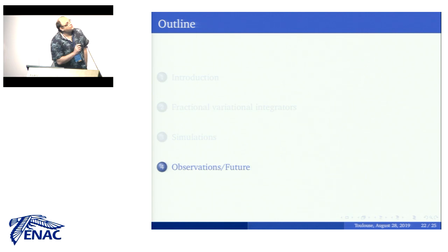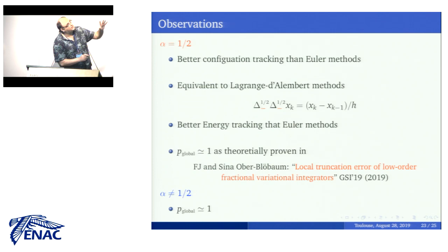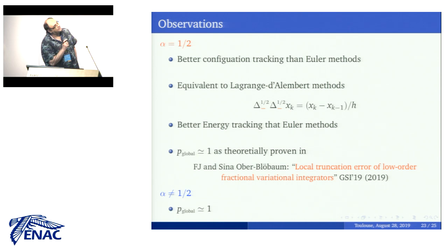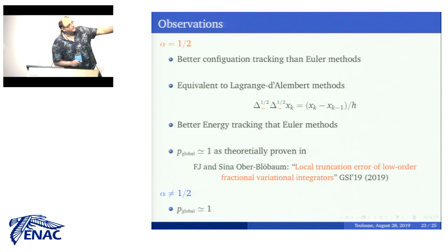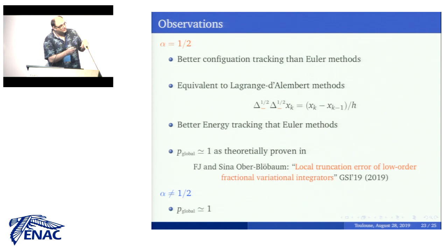The conclusions we extract from the performance of the integrator are the following. We see that the tracking of the configuration is much better than the other methods. The method is equivalent to the Lagrange-Lambert method, and that can be proven by means of the property we proved in the beginning. The energy is again better tracked than by the other methods. What we proved in the GSI paper is that the method should be order one, and the same for alpha different from one-half. So what we observed in the simulations is exactly what we expect theoretically.